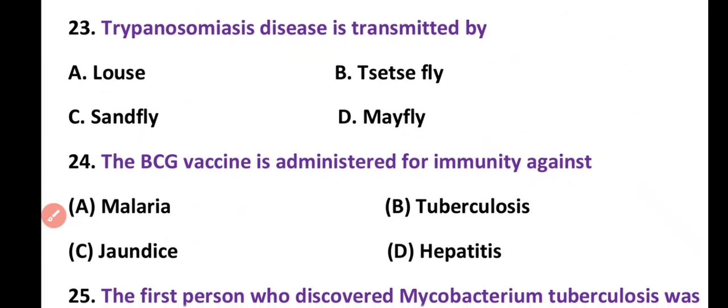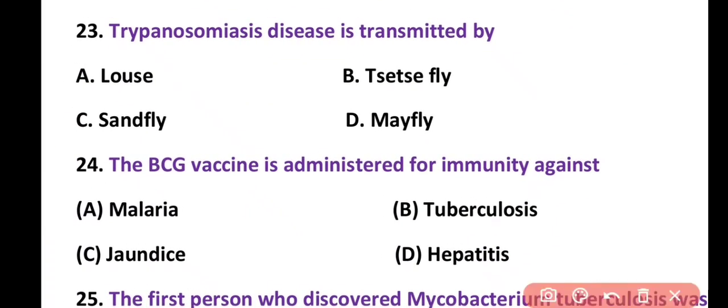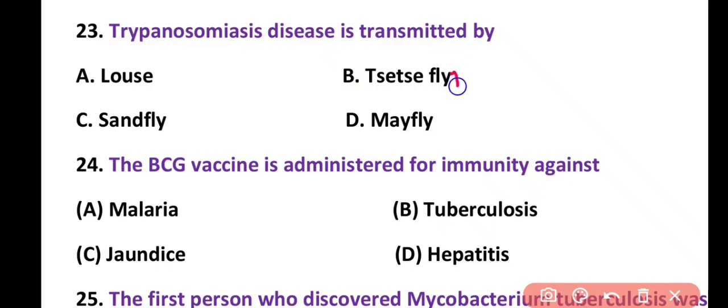Question 23. Trypanosomiasis disease is transmitted by: louse, tsetse fly, sand fly, or mayfly. Correct answer is option B. Trypanosomiasis, which is also known as African sleeping sickness, is transmitted by the tsetse fly.